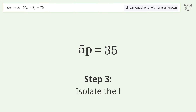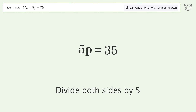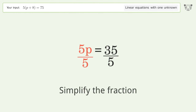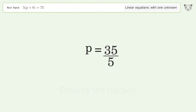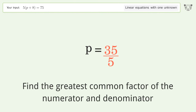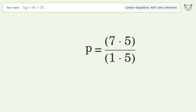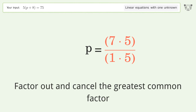Isolate the variable: divide both sides by 5. Simplify the fraction by finding the greatest common factor of the numerator and denominator, then factor out and cancel the greatest common factor.